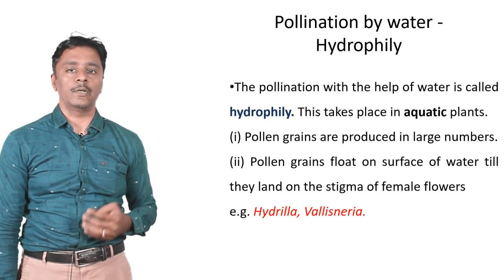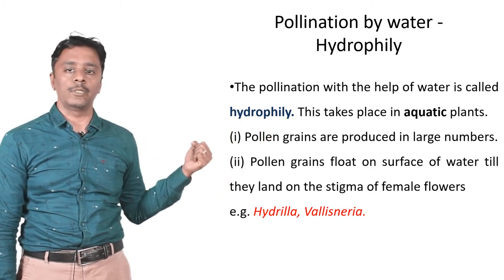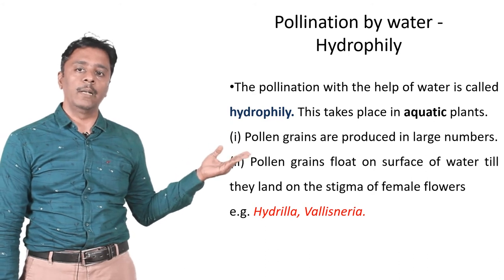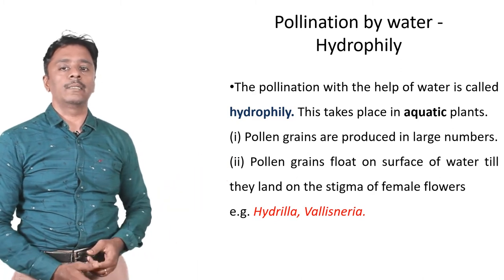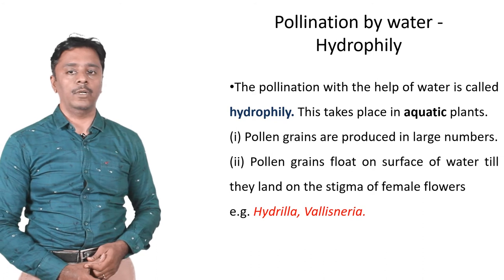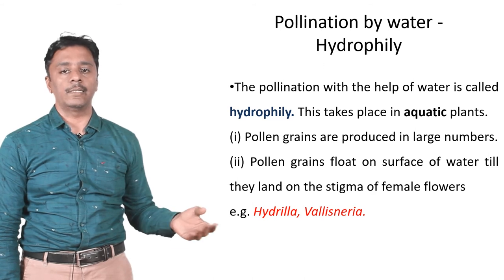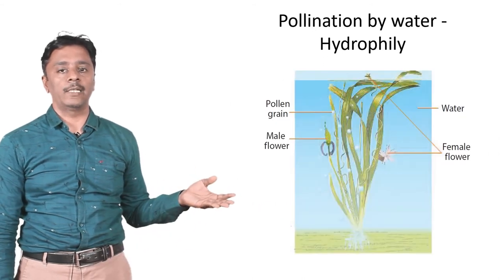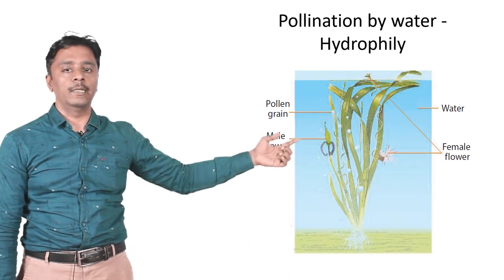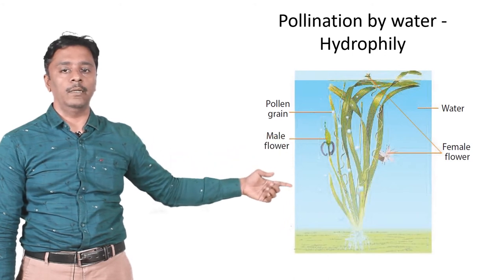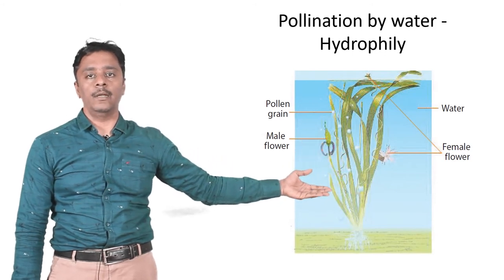The next one is pollination by water, also called hydrophily. The pollination with the help of water is called hydrophily. This takes place in aquatic plants. Pollen grains are produced in large numbers and float on the surface of water until they land on the stigma of the female flowers. Examples: Hydrilla and Vallisneria. You can see the male flower releasing pollen grains that float and reach the female flower by means of water.